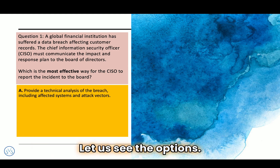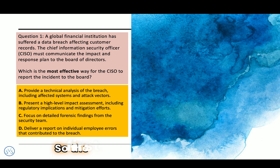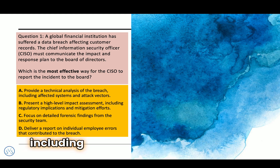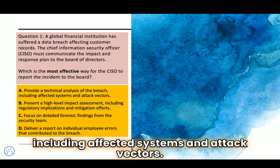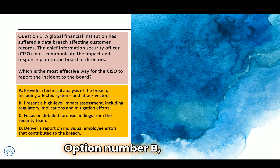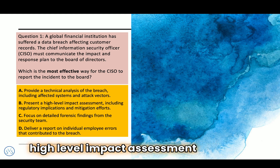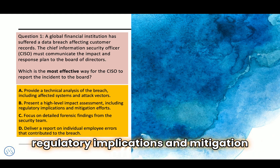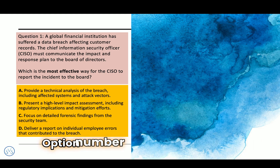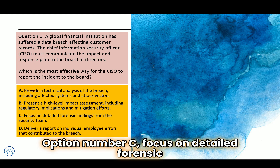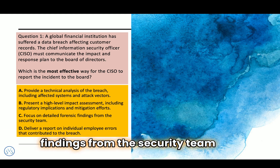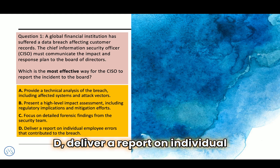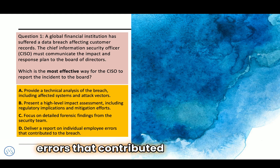Let us see the options. Option A: provide a technical analysis of the breach including affected systems and attack vectors. Option B: present a high-level impact assessment including regulatory implications and mitigation efforts. Option C: focus on detailed forensic findings from the security team. Option D: deliver a report on individual employee errors that contributed to the breach.